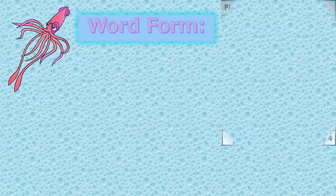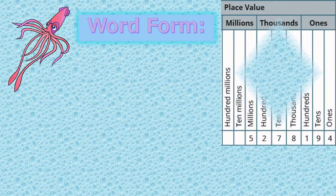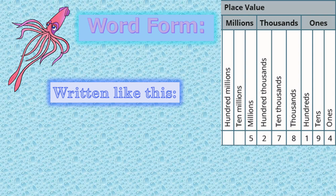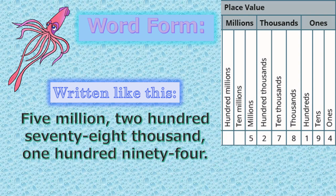Word form. When writing a number in word form, we write the words only. Let's take a look at the number at the bottom of the chart. To write this in word form: five million, two hundred seventy-eight thousand, one hundred ninety-four.